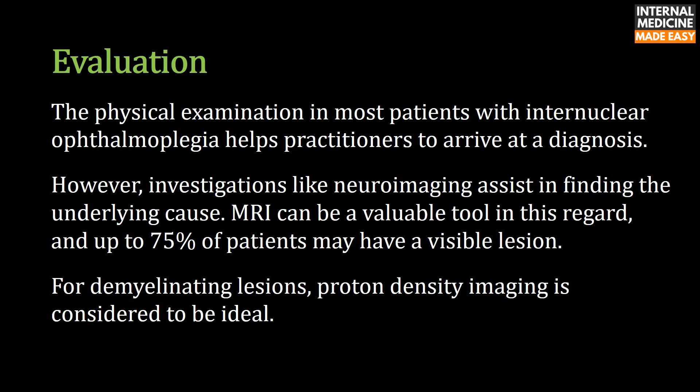Evaluation. The physical examination in most patients with internuclear ophthalmoplegia helps practitioners to arrive at a diagnosis. However, investigations like neuroimaging assist in finding the underlying cause. MRI can be a valuable tool in this regard, and up to 75% of patients may have a visible lesion. For demyelinating lesions, proton density imaging is considered to be ideal.